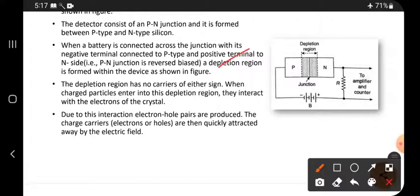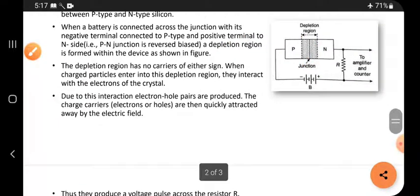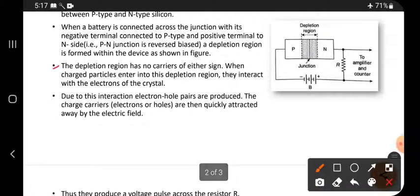A depletion region is formed within the device as shown in the figure. In the depletion region, electron-hole pairs will occur. No single electron, no single hole will be available. The depletion region has no carriers on either side, no plus charge and no minus charge. Only the recombination will be present.